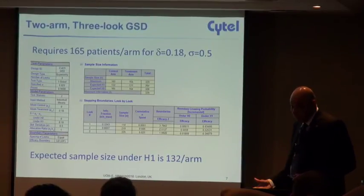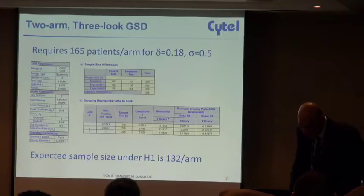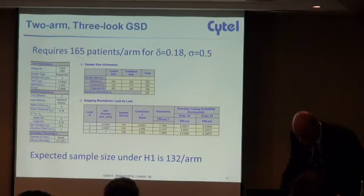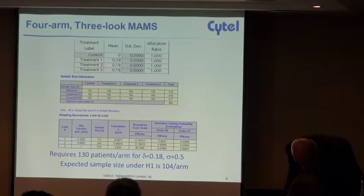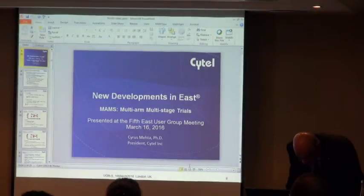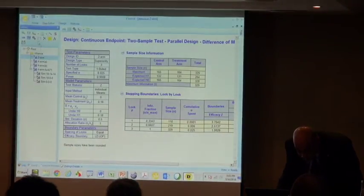First of all, if you had only a two arm trial and you had three looks, a two arm three look group sequential design, you can easily put that into East and you can see well I need about 165 patients per arm for doing this with two arms and three looks. Now you want to go to four arms.